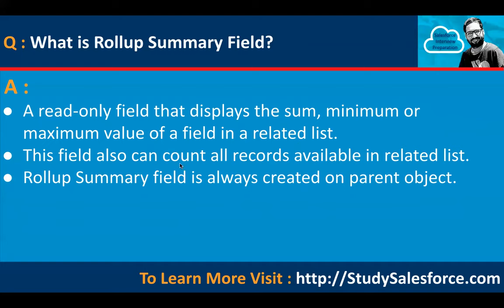The rollup summary field can also count all records available in the related list. On the parent record, all child records related to that parent record can be found in the related list. The rollup summary field is always created on the parent object. When you create the rollup summary field, you can also apply a conditional rollup — for example, to include all records or only certain records based on a condition.